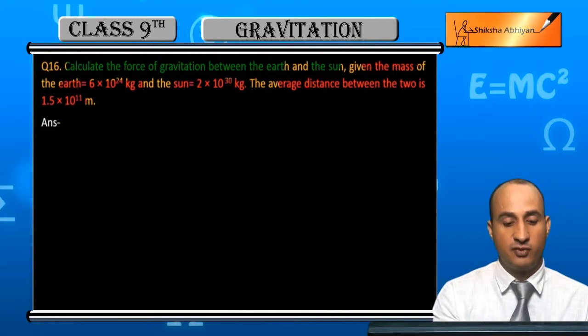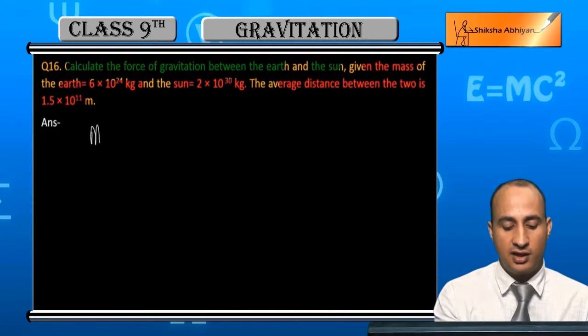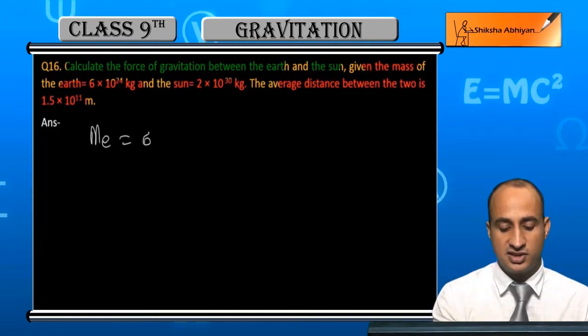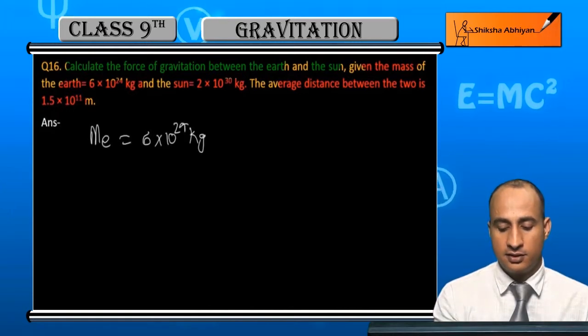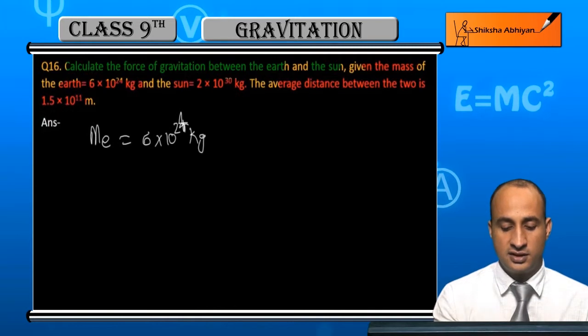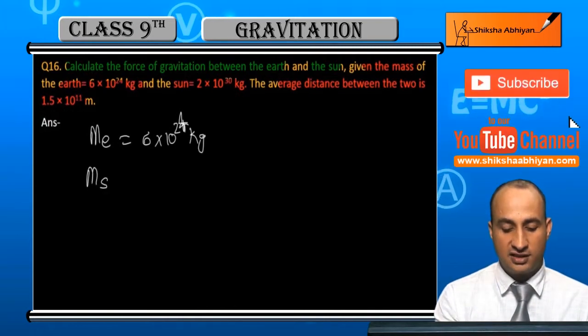Let me write down the information. Mass of Earth, Me = 6×10²⁴ kg, and mass of Sun, Ms = 2×10³⁰ kg.